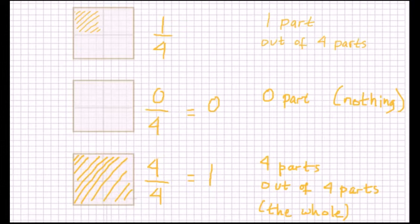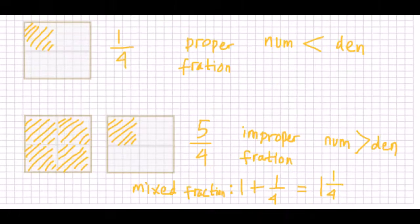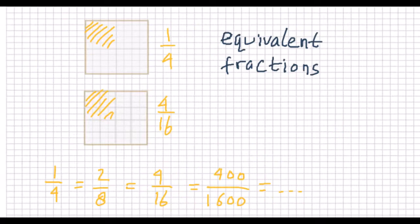And 4 over 4 is one whole, that is equal to 1. How about 5 over 4? That fraction is called an improper fraction because the numerator is larger than the denominator, and that means the fraction is larger than one. An improper fraction can be written as a mixed fraction — here 5 over 4 can be written as 1 plus 1 over 4.